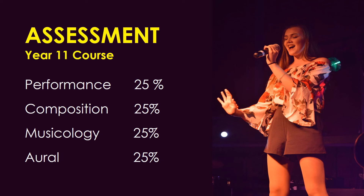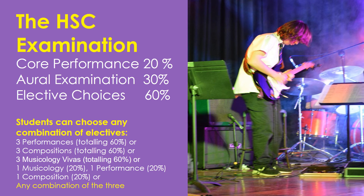Assessment in Year 11 is equally weighted across all four learning areas. In the HSC examination, all students are required to sit for the mandatory core performance and oral examination for a total of 50 marks. The remaining 60 marks will be determined from their elective choices. The total of 110 marks will be converted to 100% to provide their examination and ATAR mark. Students who wisely choose their electives can specialise in learning areas that they excel in and enjoy, and maximise their HSC mark.